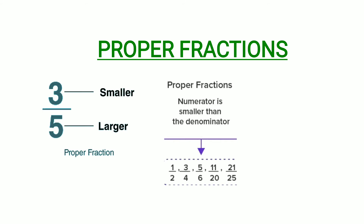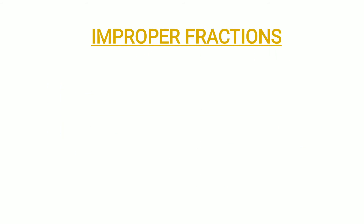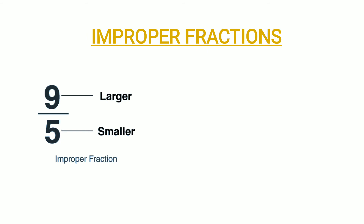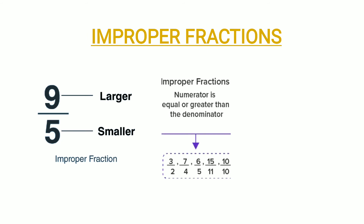Now, proper fractions. In proper fractions, the numerator is smaller than the denominator. As you can see, three is the numerator which is smaller than five, which is the denominator — so such fractions are known as proper fractions. You can also see a circle divided into six parts; the fraction for the colored part is five upon six, and five upon six is a proper fraction as the numerator is smaller than the denominator.